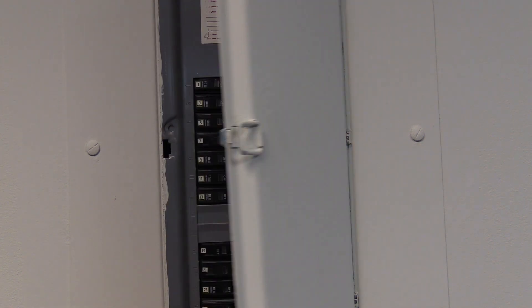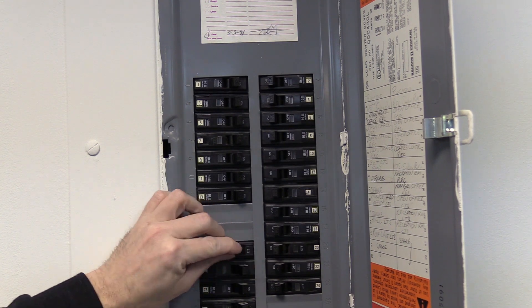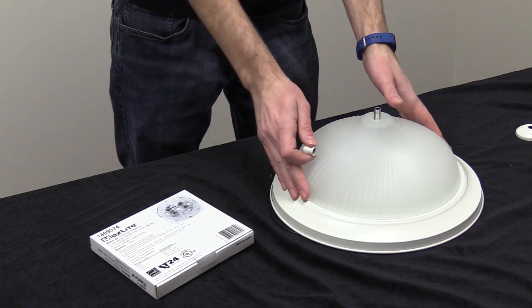First, we'll turn off the electrical power at the fuse or circuit breaker box. Next, remove the diffuser, lamps, and sockets.